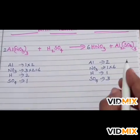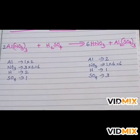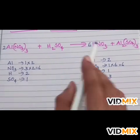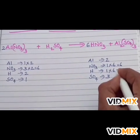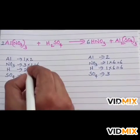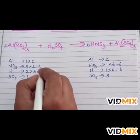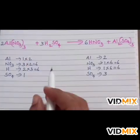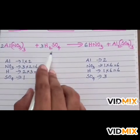Now the hydrogen atom number changed into 6. Now here in LHS we have to multiply by 3. So the sulfate ion becomes 3 here.